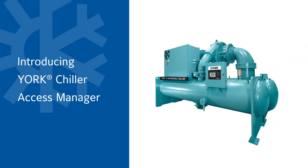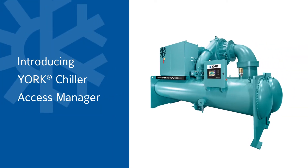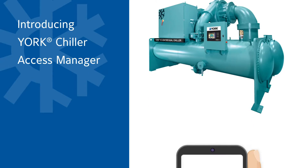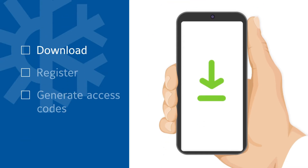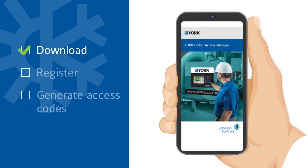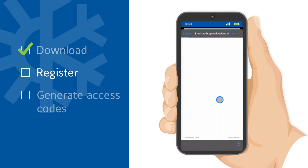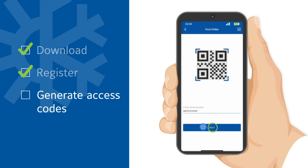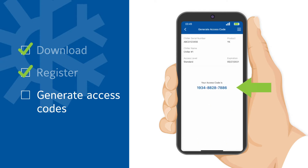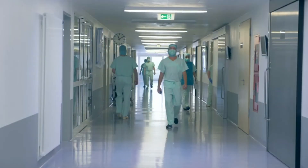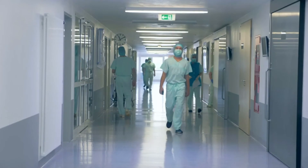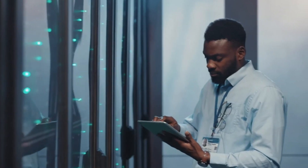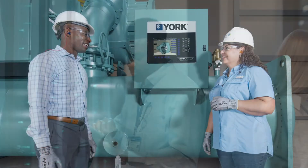York Chiller Access Manager provides secure access to York Chiller control panels. Simply download the York Chiller Access Manager app, then create an account to generate dynamic access codes for approved users. The app ensures enhanced protection of a critical facility asset, your York Chiller.